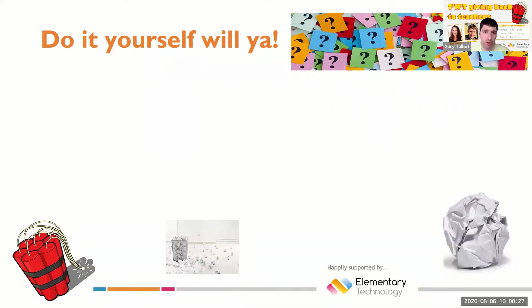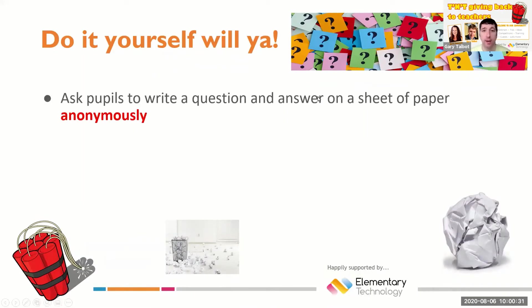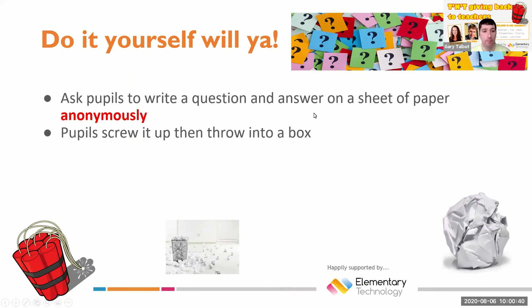And it's something called 'Do It Yourself, Will You?' So what you do is you get pupils to write a question on a piece of paper with an answer. Get them to do it anonymously — they can put their names on if they want, but it probably works better anonymously.